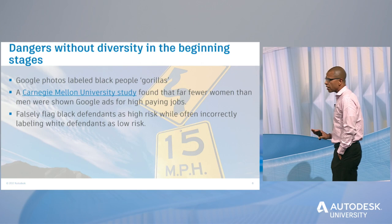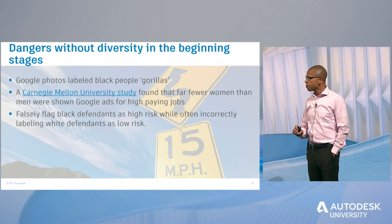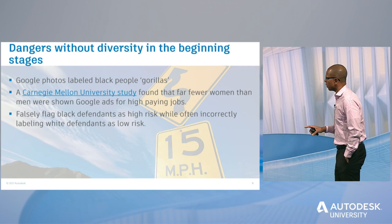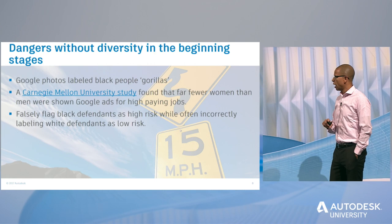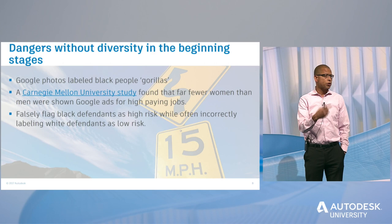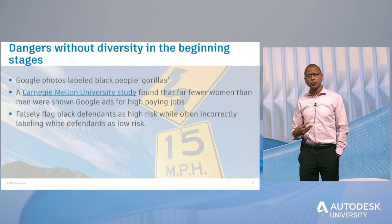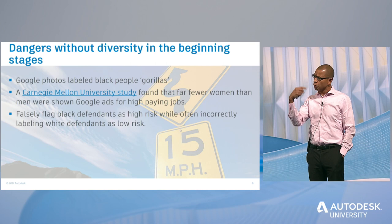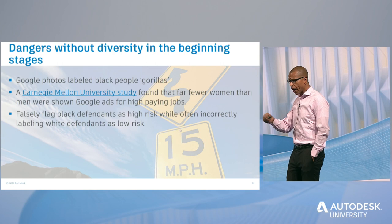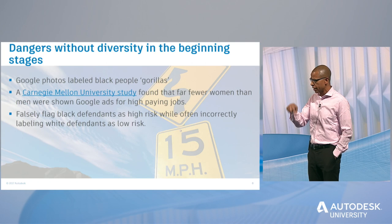The dangers of not thinking about diversity from the beginning: Google Photos we already discussed. A Carnegie Mellon study showed that far fewer women than men were shown Google ads for high-paying jobs. And there's a famous case around defendants being flagged — AI tools used to flag recidivism falsely flagged African Americans as more likely to return to prison versus Caucasians who were actually high risk. This happened because of the way questions were designed and the lack of diversity at the beginning.